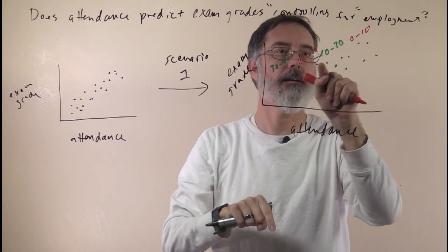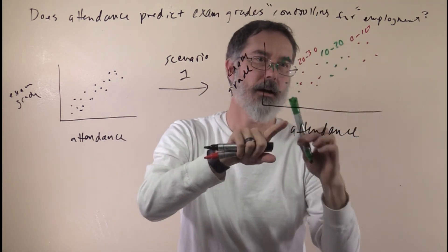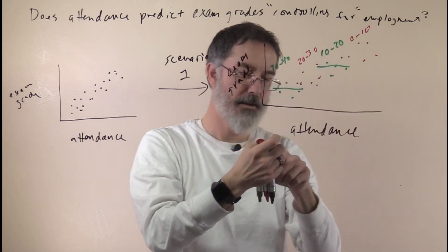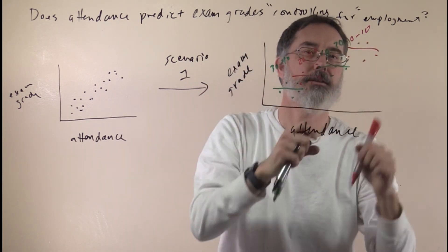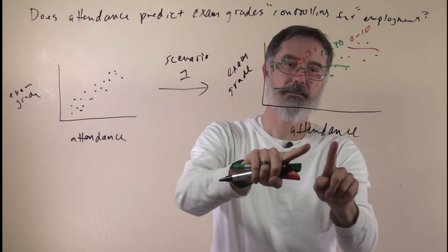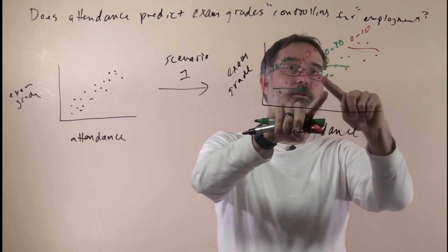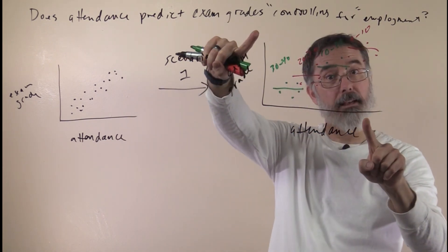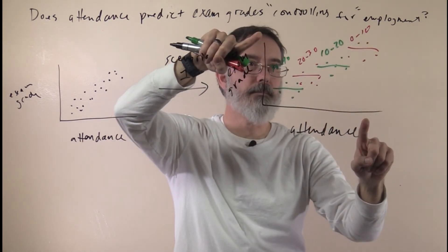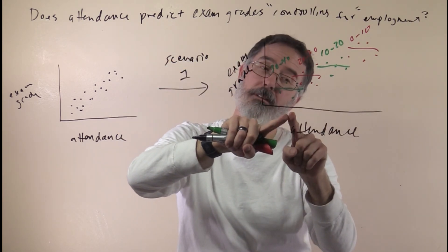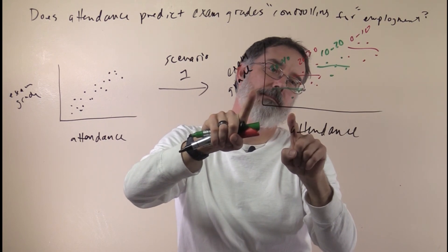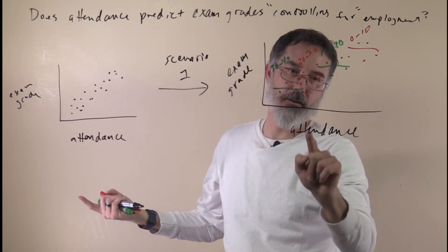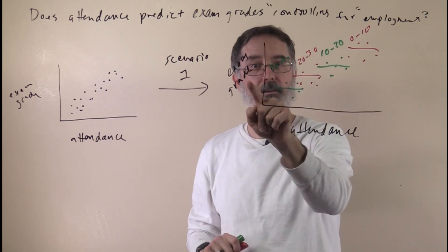We look at each level and see if there is a positive correlation. Here I tried to draw it so that there is no correlation at any of the four levels. If this is what the data were like, then attendance no longer predicts exam grade controlling for employment. What is happening is people who did not work very much were able to attend a lot of class and got really good grades. People who worked a lot could not attend much class and did not do very well. It could be that people who worked a lot weren't able to study or attend class — they were too busy — and that is why their exam grade is low.